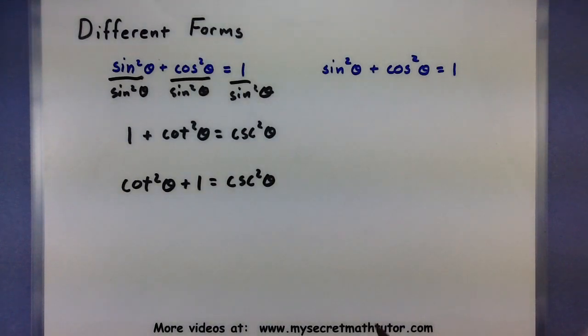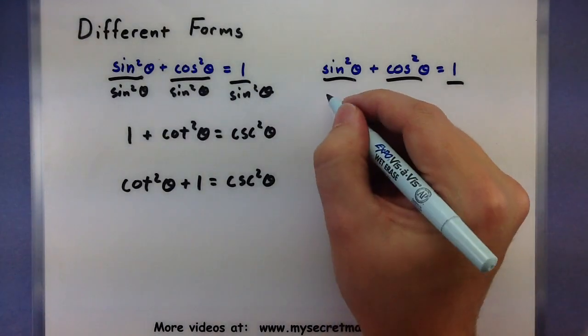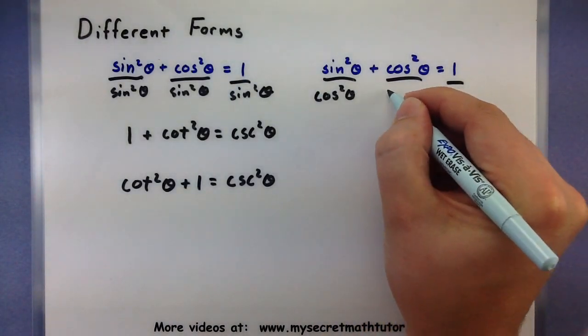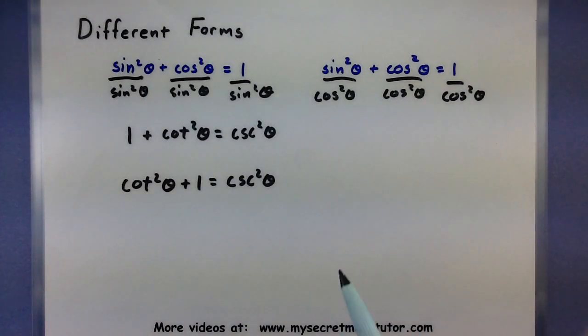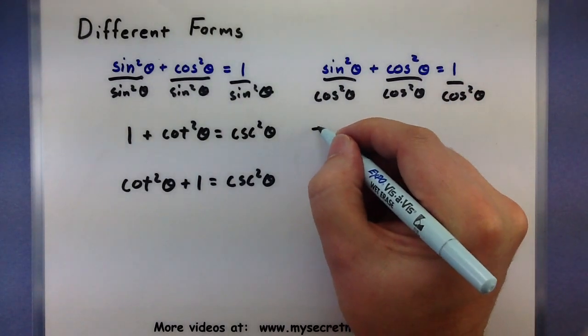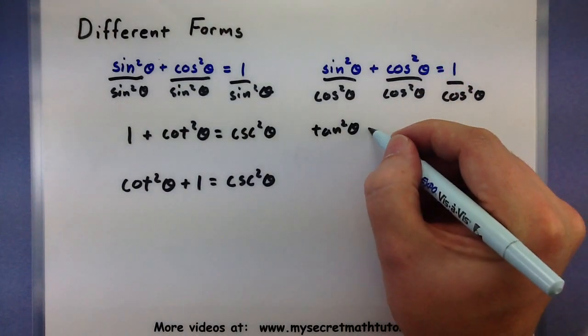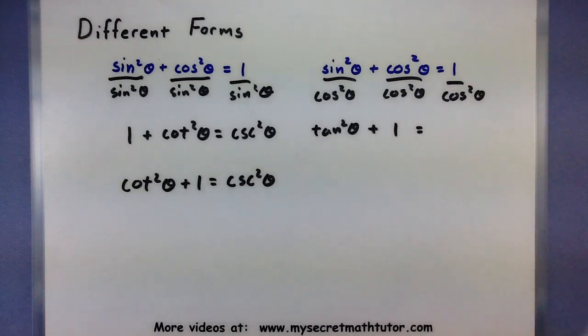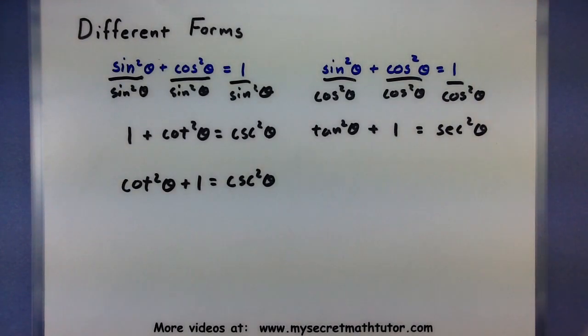What about the other one for tangent? Well you build it in a very similar way, only this time you divide everything by cosine. So cos²θ, cos²θ, and cos²θ. Watch what happens with this. So sin² over cos², tan²θ. Cosine squared over cosine squared, those are the same, so 1. And 1 over cos², there's your sec². So these other two guys are built directly from your sin²θ + cos²θ. And of course you know that this guy is equal to 1, so these guys also work.